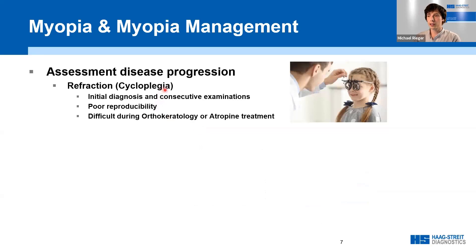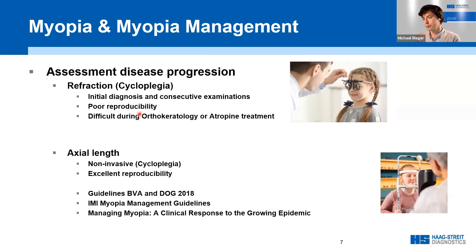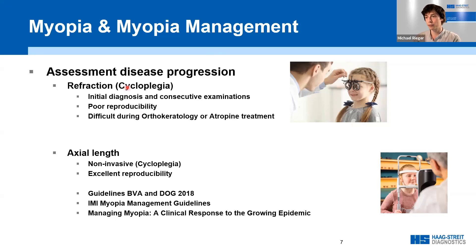Historically, myopia progression assessment was performed using refraction alone, and refraction is still considered important. However, the repeatability of these measurements may be insufficient, and determination becomes very difficult during orthokeratology or atropine therapy. New guidelines indicate that axial length determination should be an important part of myopia progression assessment, as axial length is considered the largest contributor to refractive error, though it doesn't always correlate with it — as shown in atropine studies.